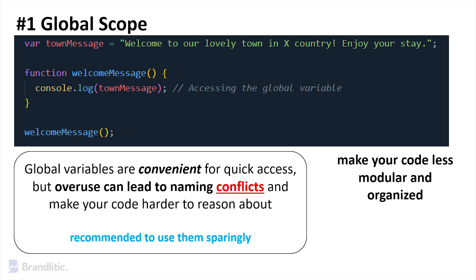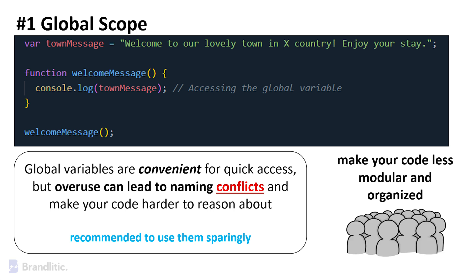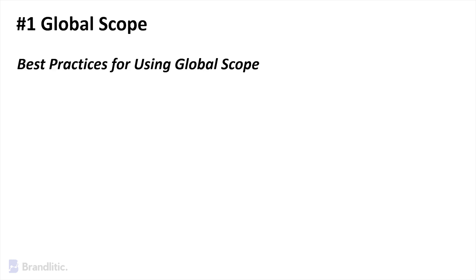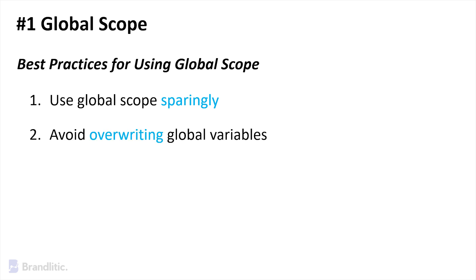Global variables can make your code less modular and organized. Just imagine if everything is in the town square — it becomes challenging to manage and isolate different aspects of your code. Here are some best practices for using Global Scope: first, use Global Scope sparingly and only declare variables globally when they truly need to be accessed globally. Second, avoid overwriting global variables to prevent unintended side effects. Third, use descriptive variable names that clearly convey their purpose, especially in Global Scope where they can affect many parts of your code.